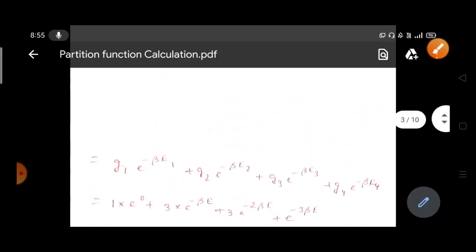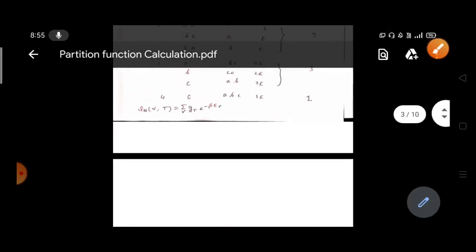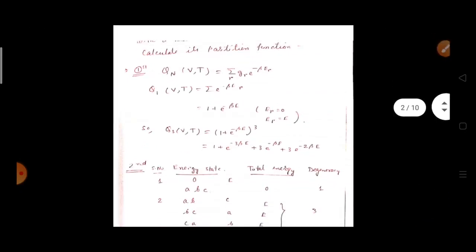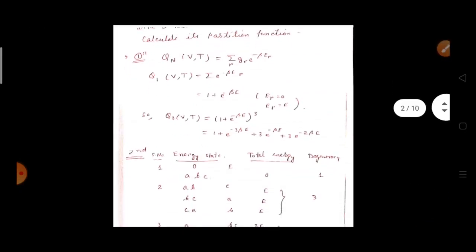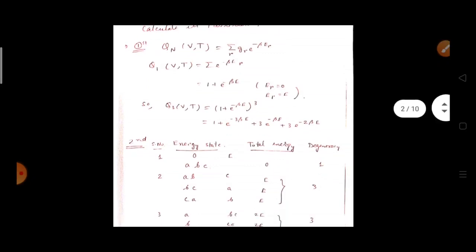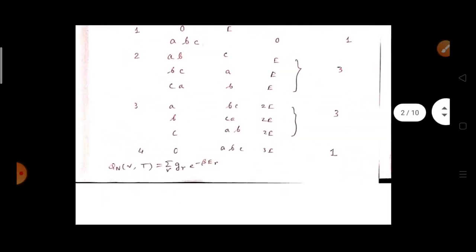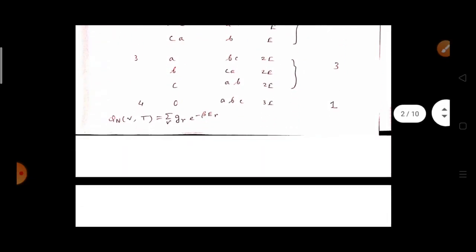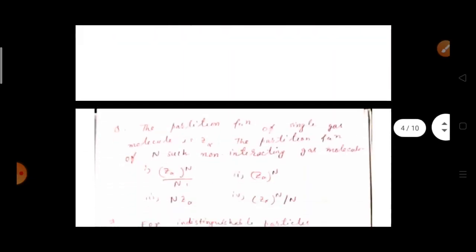You can calculate the partition function either by the single-particle method or by working through all the configurations of the independent particles — both methods give the same result.